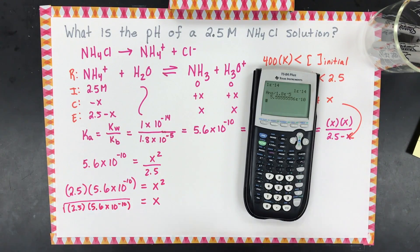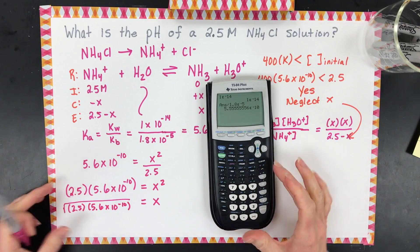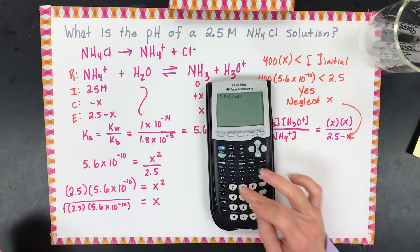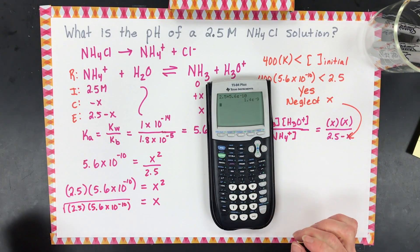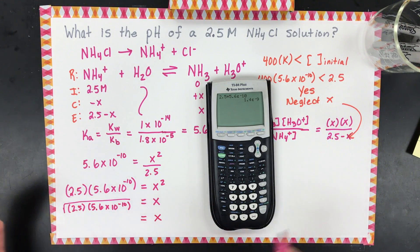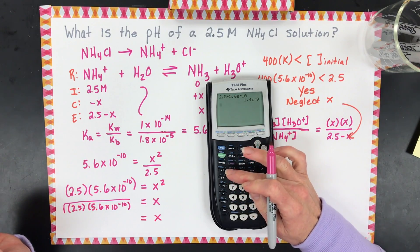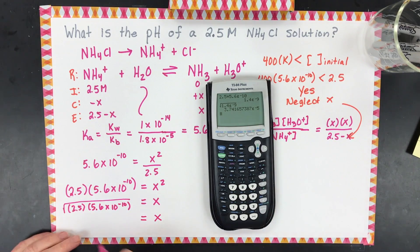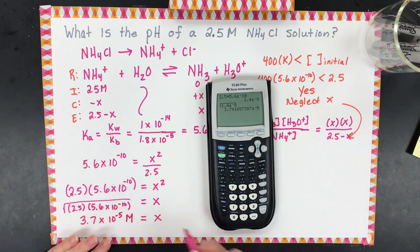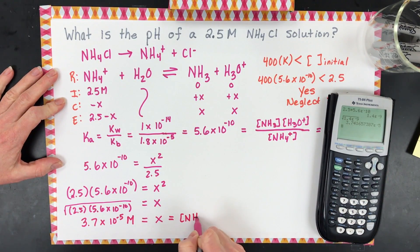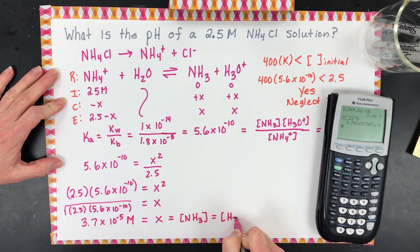On the calculator: 2.5 times 5.6×10⁻¹⁰ gives 1.4×10⁻⁹. Then take the square root of that and I get 3.7×10⁻⁵ molar. This is the concentration of ammonia formed and also the concentration of hydronium.